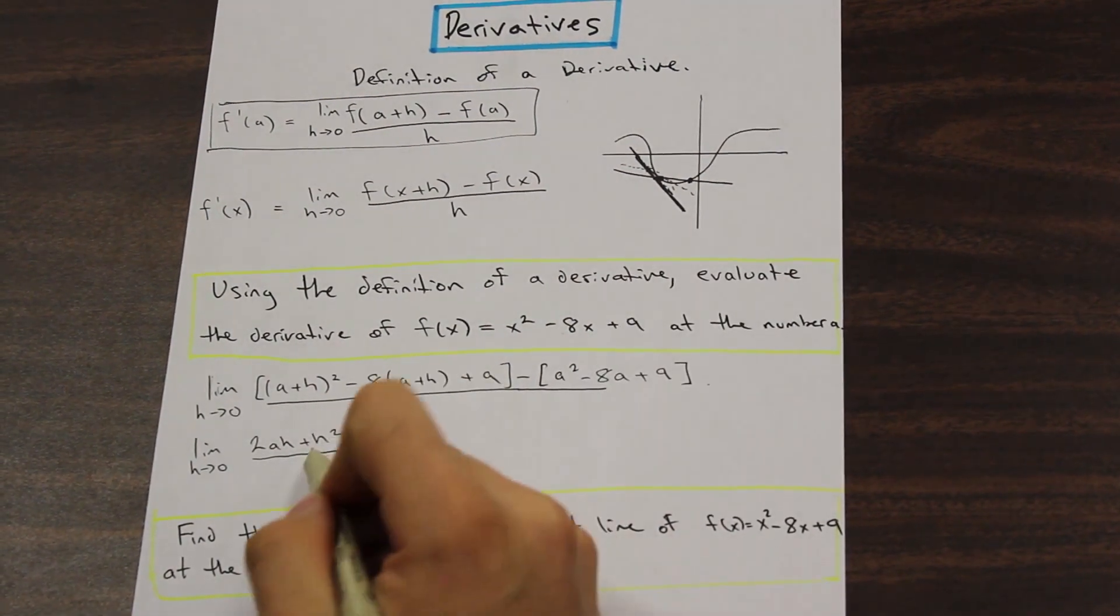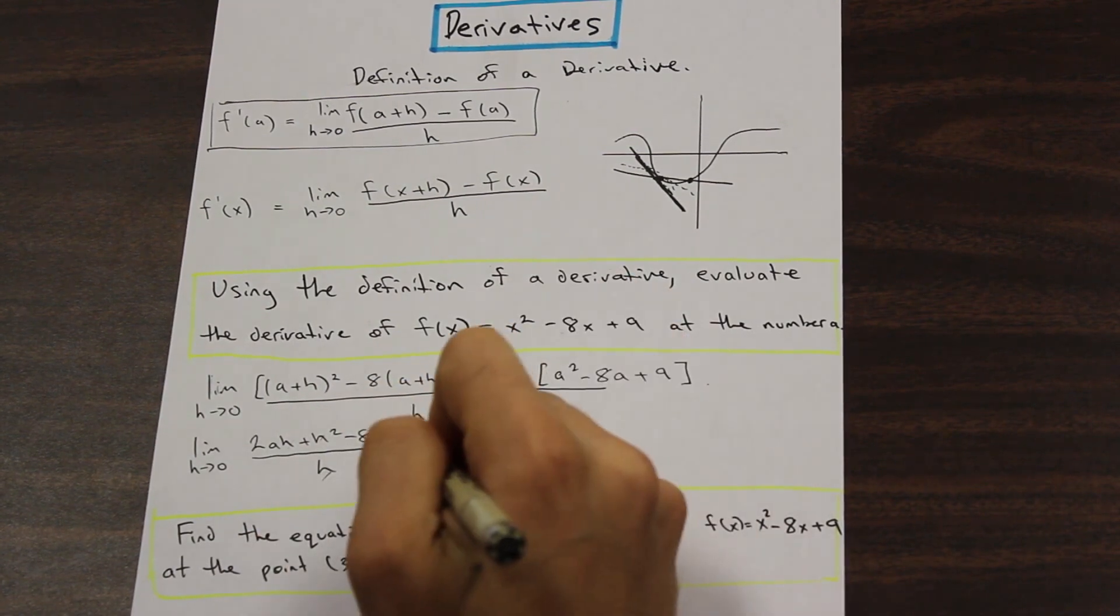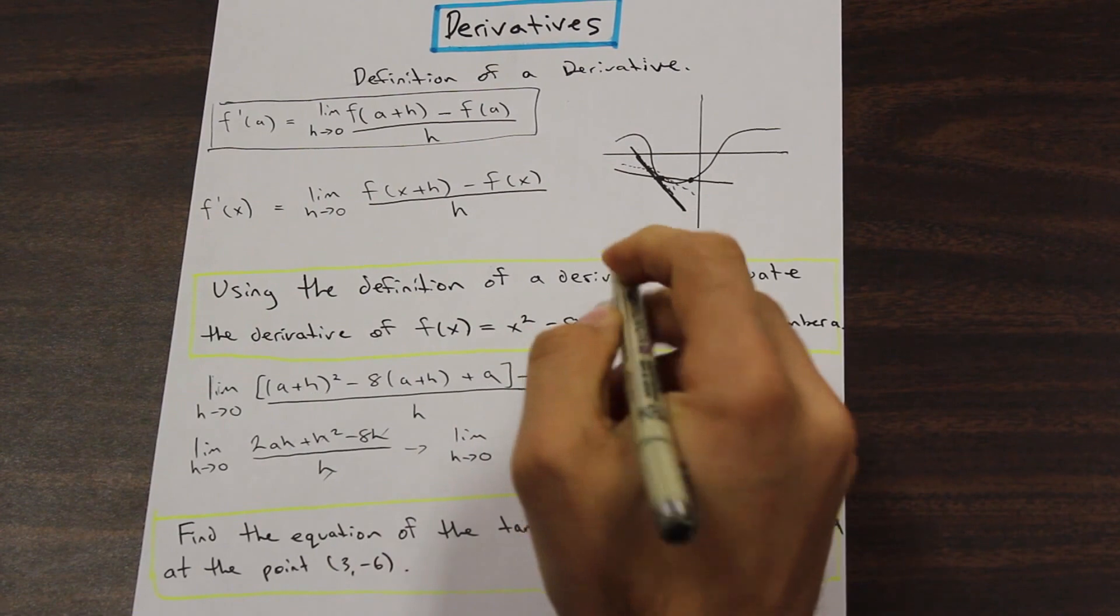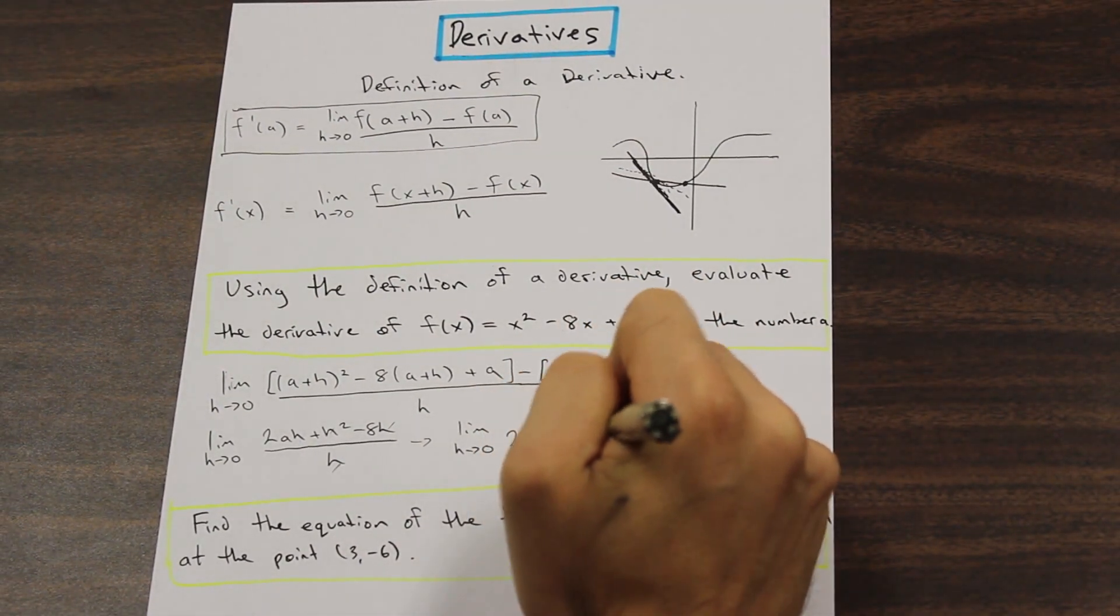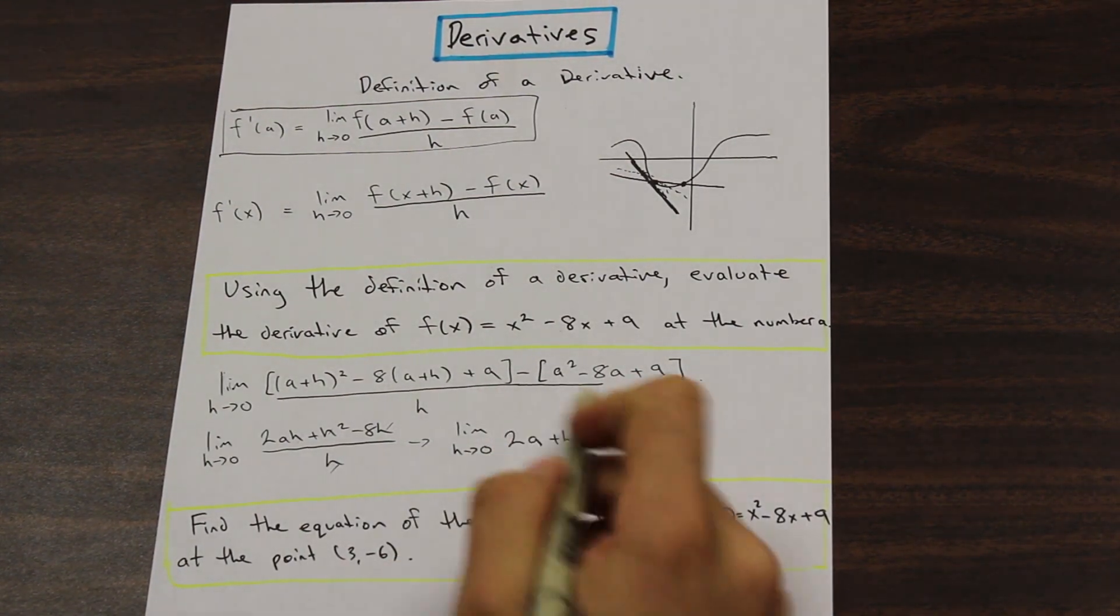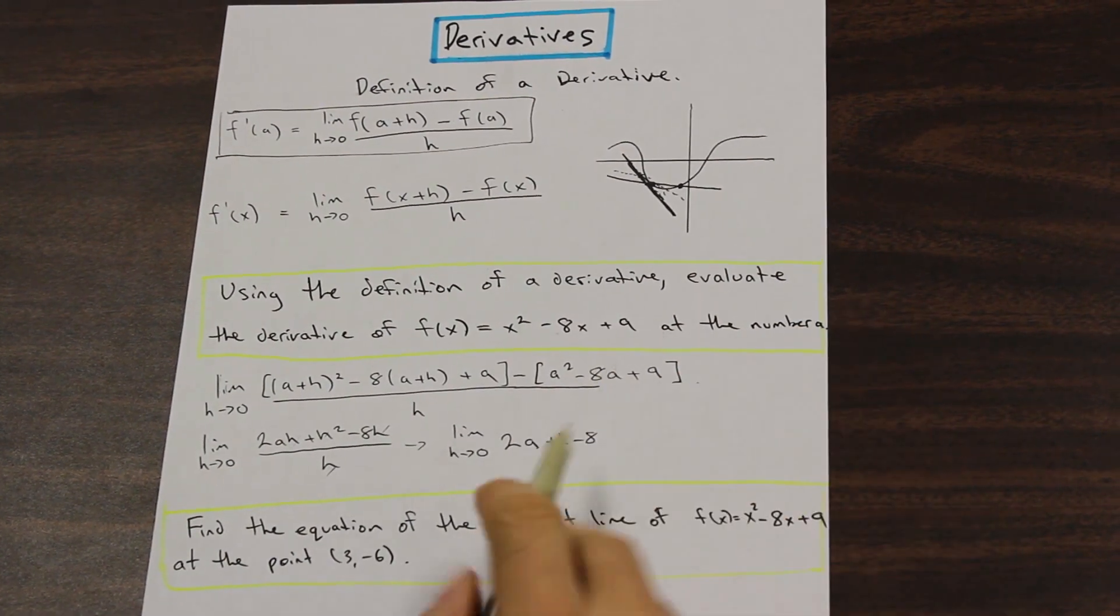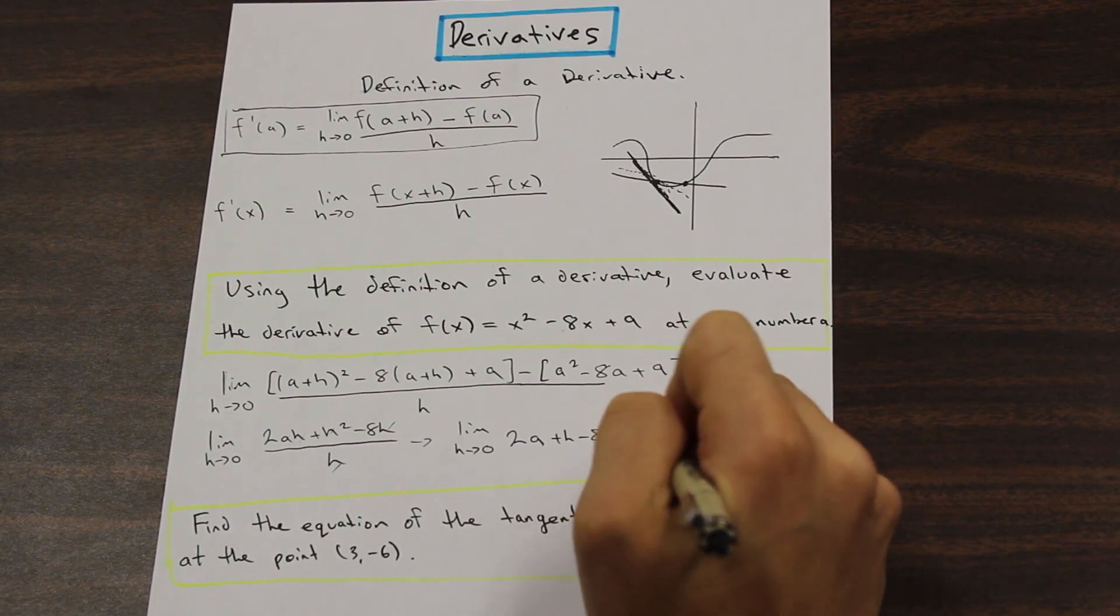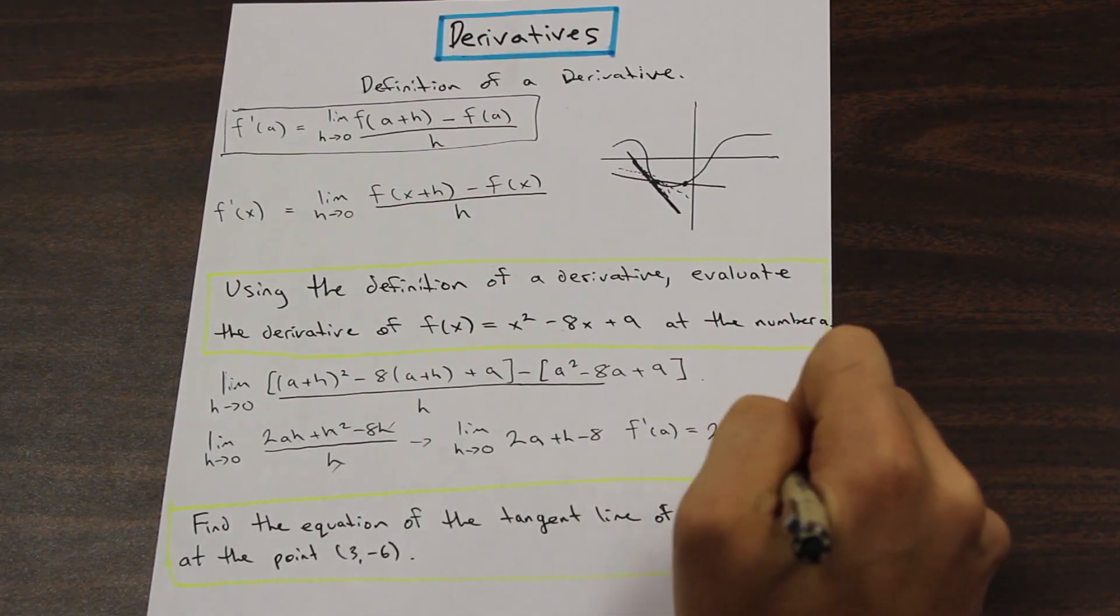Perfect. And as we can see here, we can factor an h out of the top and cancel that with the bottom. That's going to lead to us getting an answer of 2a + h - 8. Now we can apply this h limit in and we have a defined output, which is what we want.